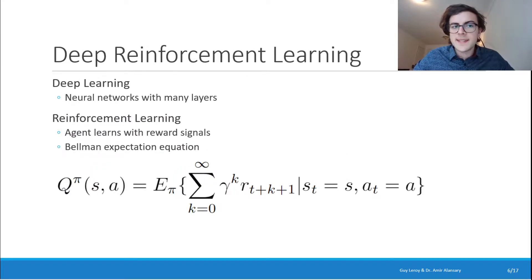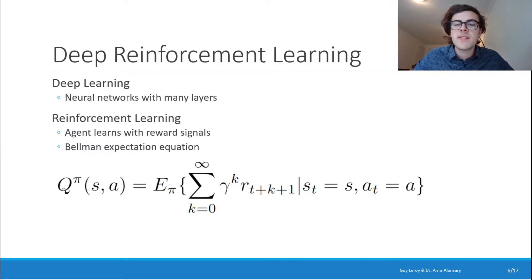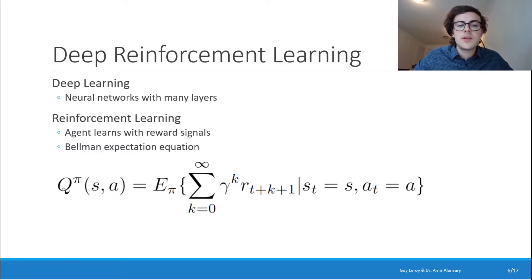Let's go back to what deep reinforcement learning is to really understand what we've done. Deep learning is basically neural networks that have many layers — that's what they call deep. Reinforcement learning is about an agent navigating within an environment, taking actions, and learning through reward signals. This is mathematically founded on the Bellman Expectation Equation, which quantifies the future rewards an agent can get by taking an action inside a certain state.